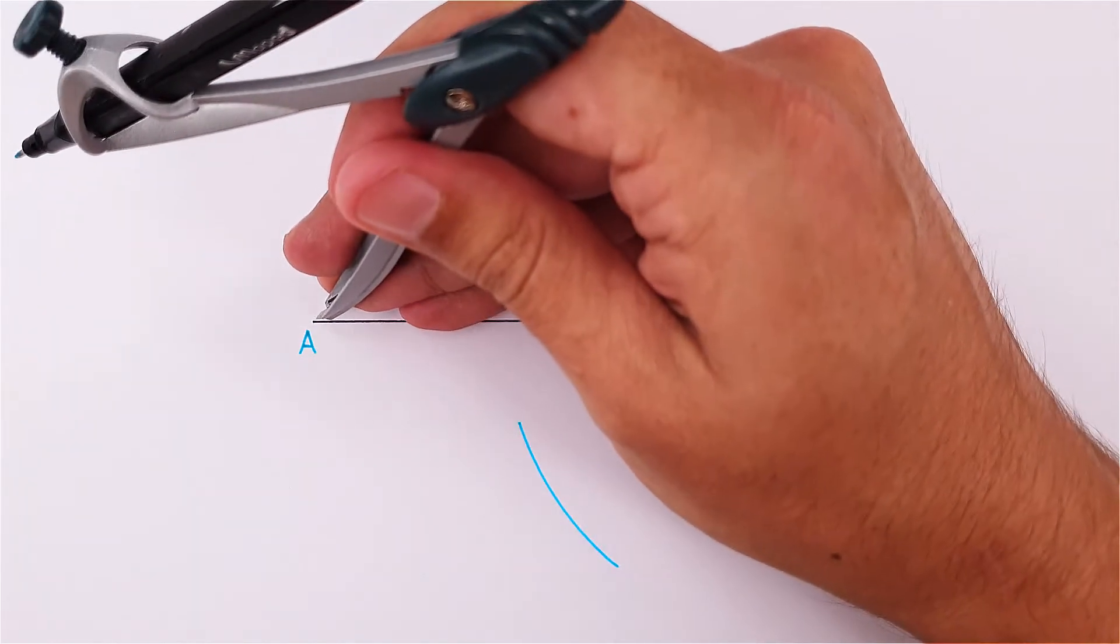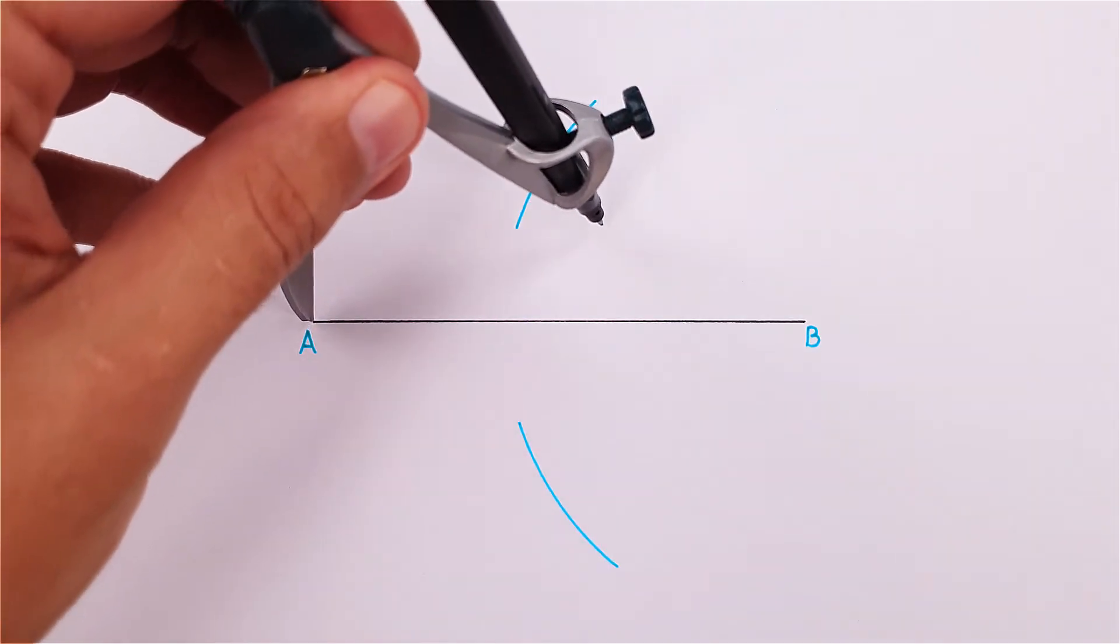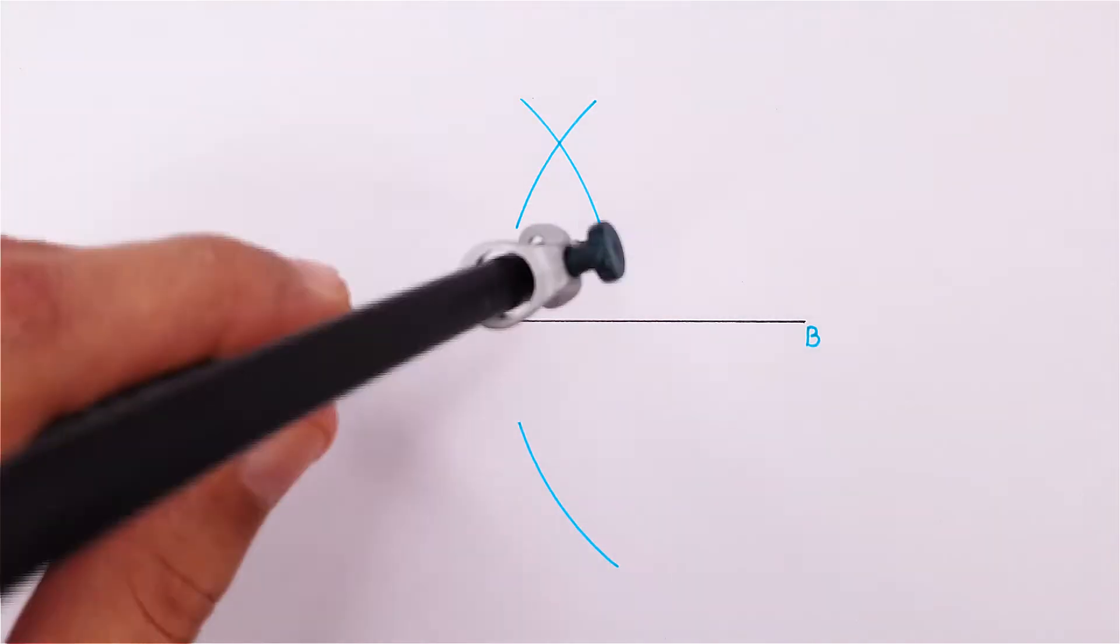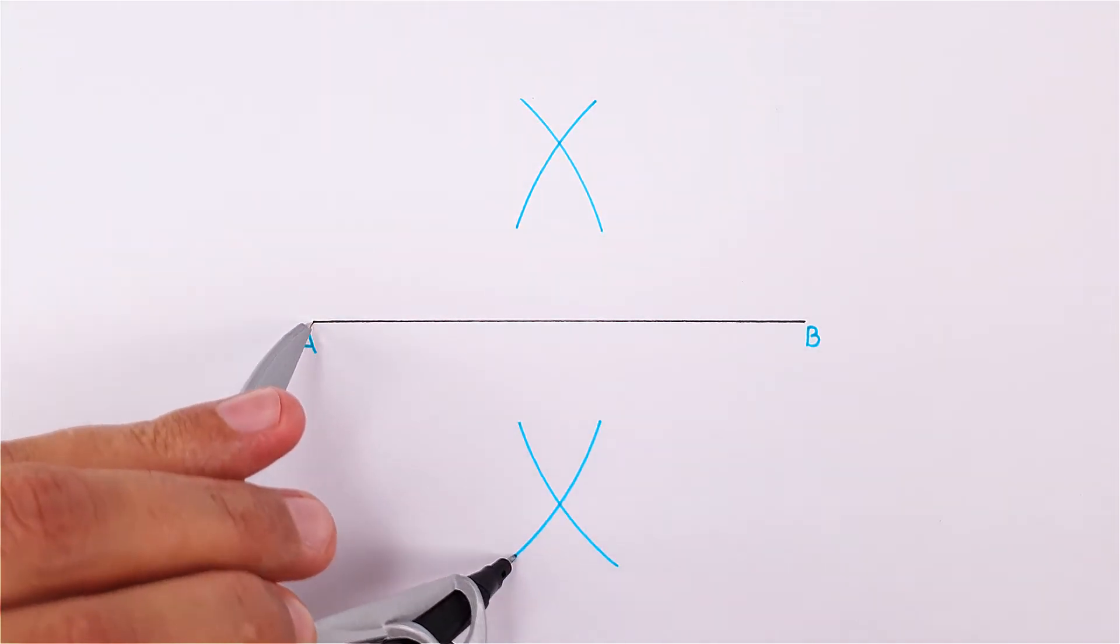Without making any adjustments to your compass, place it on the opposite end and draw another arc above and below line AB using the same measurement.